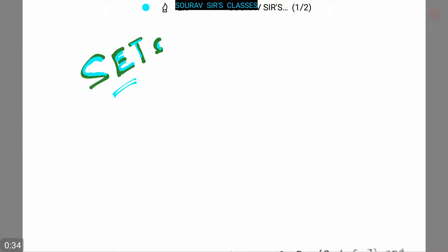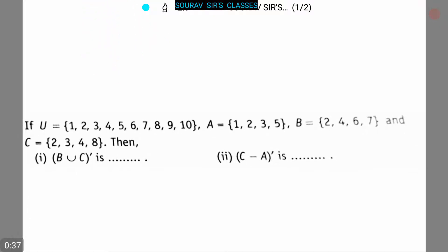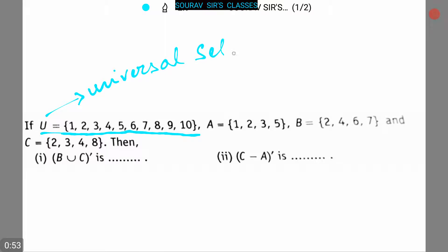Today our topic is Sets. Here is our first question: U is the universal set equal to {1, 2, 3, 4, 5, 6, 7, 8, 9}. Set A is {1, 2, 3, 5}, set B is {2, 4, 6, 7}, and set C is {2, 3, 4, 8}. We have to find the value of (B∪C)' and (C−A)'.